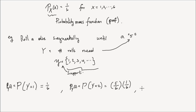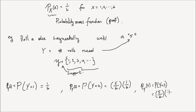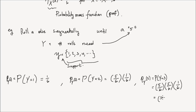What is P of y of 3? That is the probability that y takes a value of 3, and that equals: you do not observe a 5 in the first trial — that happens with a probability of 5 over 6 — you do not observe a 5 again in the second trial, but you do in the third with a probability of 1 over 6. That is equal to (5/6)² times (1/6).